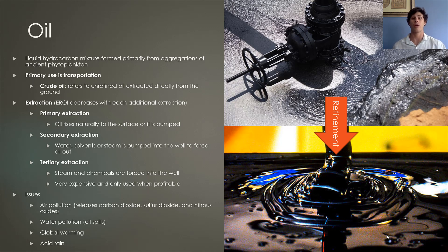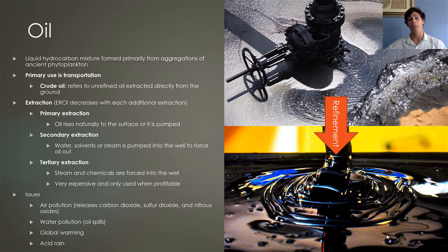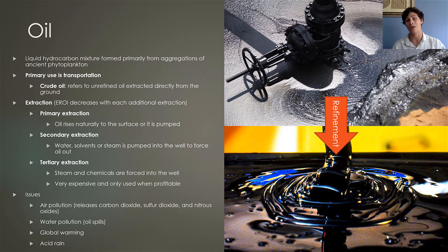First, we have primary extraction, where we drill a hole in the ground and the pressure of the oil pushes it straight up into our barrels. After that pressure subsides, we move to secondary extraction, injecting solvents, water, or other liquids into the ground to force the oil up. Finally, we use steam and other chemicals in tertiary extraction to get the very last remaining bits of oil. Each additional method of extraction results in a lower energy return on investment ratio — we invest more energy and get less back.